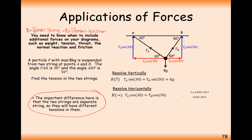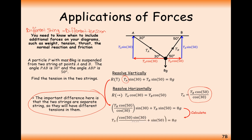So we use simultaneous equations. Rearranging the horizontal equation: T_A equals T_B cos 50 over cos 30. Substituting into the vertical equation, expanding and factorising T_B out, then dividing by the bracket gives T_B equal to 68.9 newtons. Substituting back gives T_A equal to 51.2 newtons. Both tensions are measured in newtons.